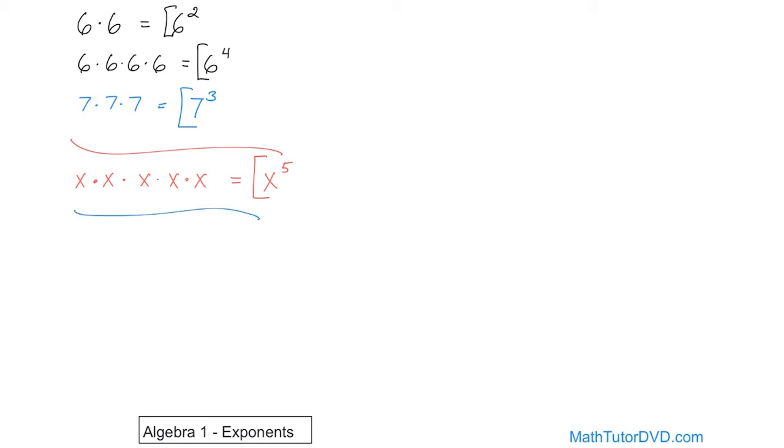What if you had the variable y multiplied by y multiplied again by y? Well, again, what we're multiplying is y, and we're doing it three times, so the exponent is 3. It's very simple.